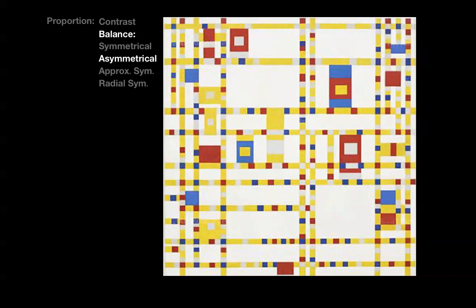This painting by Piet Mondrian is a great example of asymmetrical balance. The visual forces have a more random sense of distribution than that found in symmetrical compositions, but there is a felt sense of overall balance.